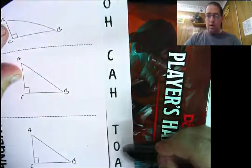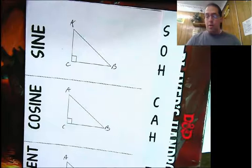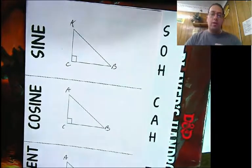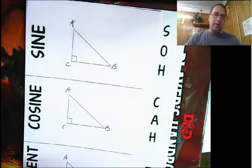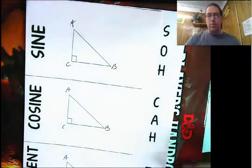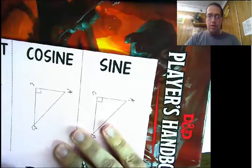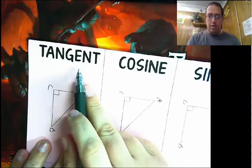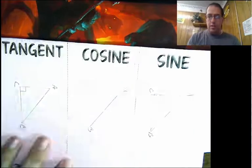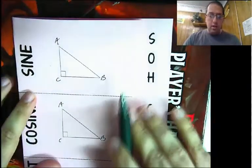SOHCAHTOA, which means absolutely nothing — well, it means something. It's a nice little mnemonic to help us remember some things. What we're going to be dealing with all the time in trigonometry is ratios of the sides of a right triangle. There are six ratios, but we are only going to be dealing with three of them: sine, cosine, and tangent. Those are the three ratios that we are going to be looking at.